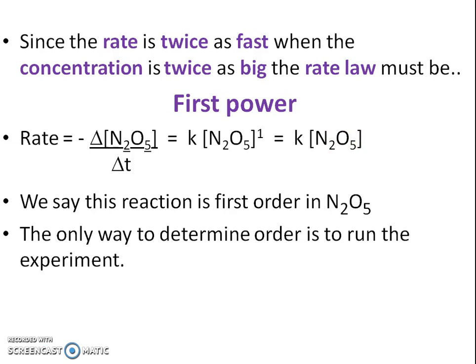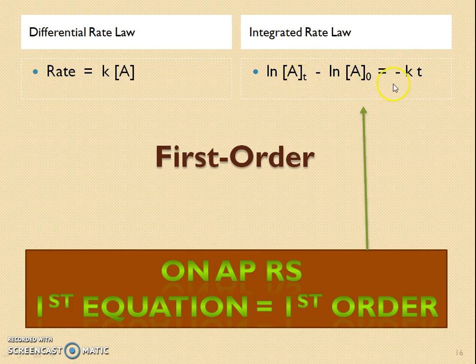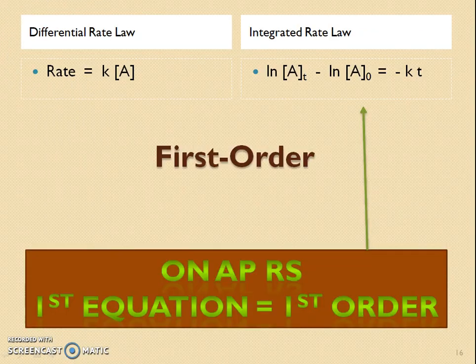We can say that this is first order. The only way to determine this is to run the experiment. This integrated rate law is on your reference sheet: the natural log of the concentration of A at any time minus the natural log of the concentration at the very beginning equals negative K times time. The first equation on your reference sheet under kinetics is the first-order reaction — first equation, first-order reaction. It's important because sometimes they give you a graph and ask what order it is, and you need to know which equation to use.